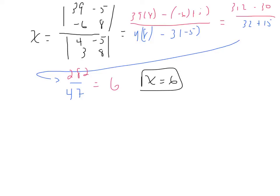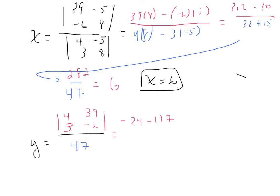Now we still have to figure out what y is going to be. In the denominator, since we already computed the coefficient matrix determinant, it's still 47. In the numerator we have the D sub y matrix: 4, 3, 39, negative 6. So 4 times negative 6 is negative 24, minus 39 times 3 which is 117. That gives us negative 24 minus 117, which equals negative 141. Dividing by 47 gives us negative 3, so y equals negative 3.